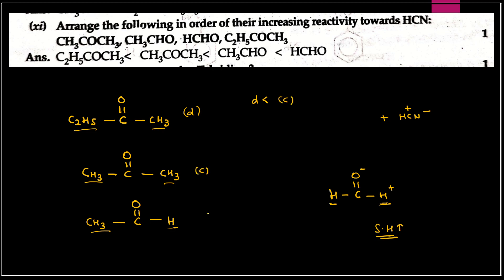Reactivity order: C option pehle, phir B, phir A. This is the reactivity order of these compounds towards HCN.